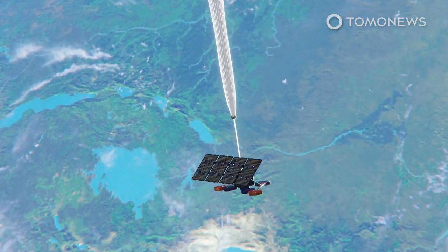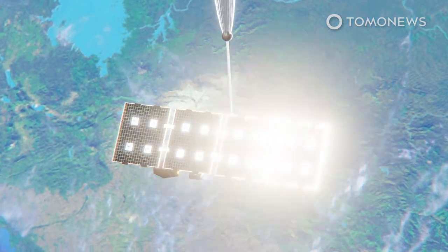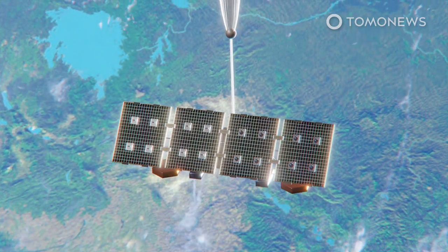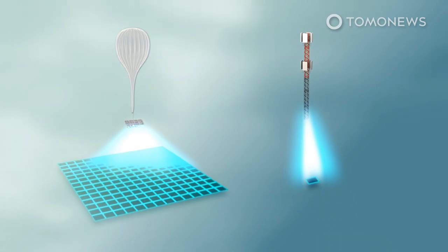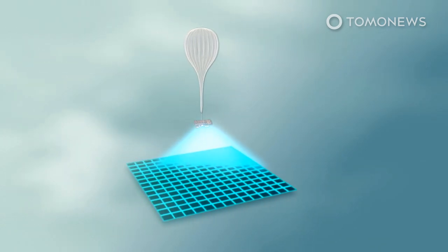The balloons carry flight controls, antennas, and solar panels, and they can stay in the air for 100 days at a time. Each vehicle has a claimed coverage footprint of over 11,000 square kilometers, about 200 times that of a cell phone tower.